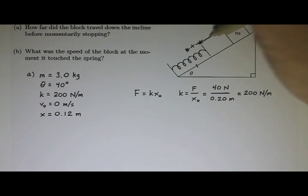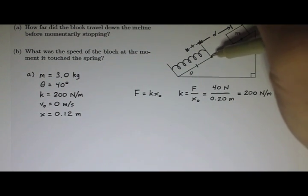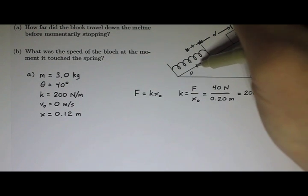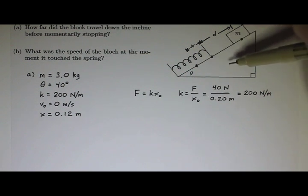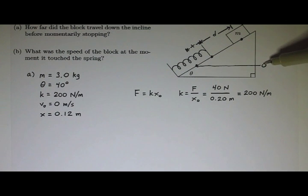And so, my block starts here, and it hits the spring there, and it compresses it down to there. I need to pick a zero line. I'm going to pick, let's say, I'm going to pick down here and make this be the zero line. That's where I'm measuring my gravitational potential energy from.